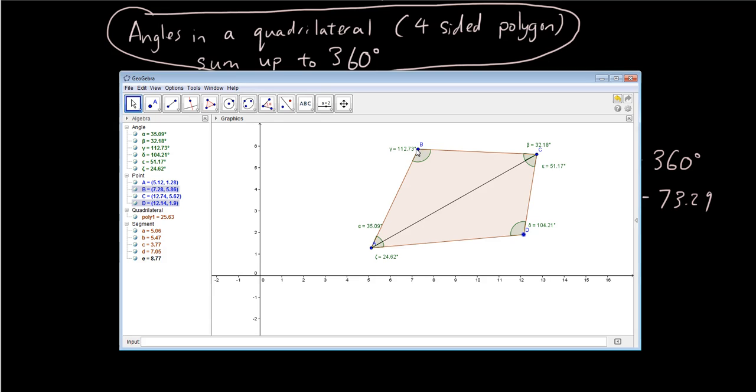And for the top triangle here, this top left triangle, we have 32.18 plus 112.73 plus 35.09, and they add up to 180 degrees.